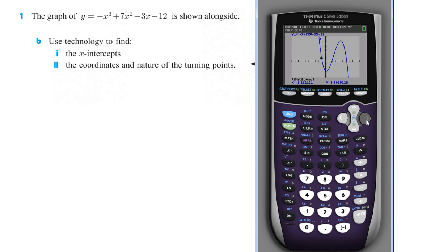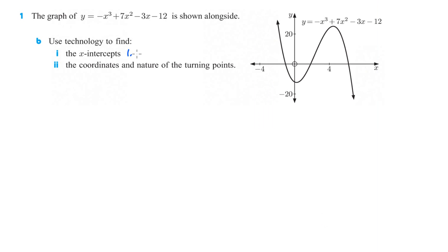Then it says right bound, so now I'm going to move it until it definitely has crossed through. Push enter again, then enter one more time and it's going to find where it crosses. It's at negative 1.0 — it doesn't say what to round to, so I'll go with negative 1.05. That's one of them.